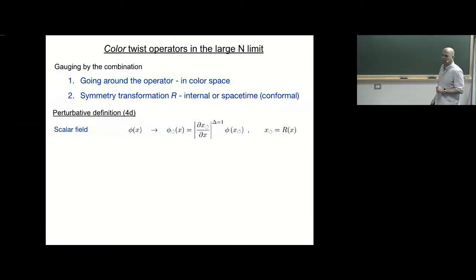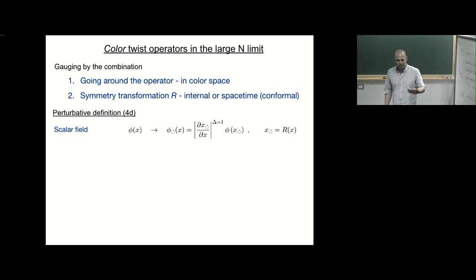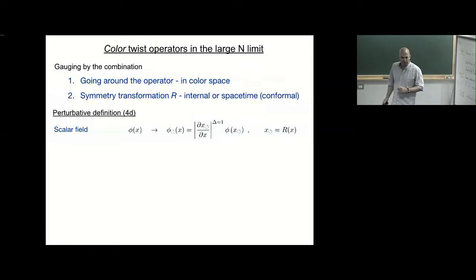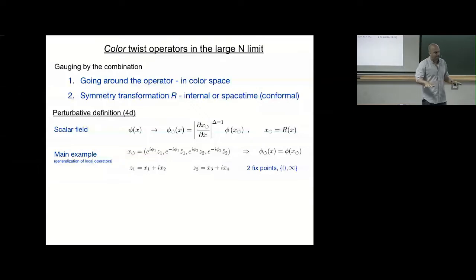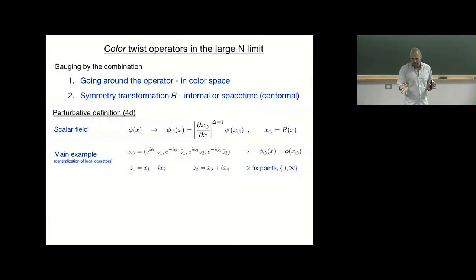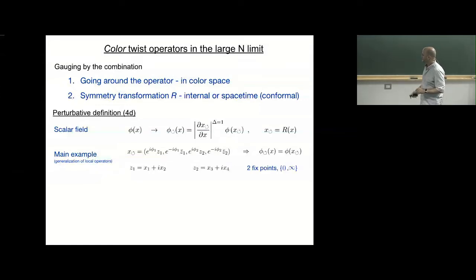Let R here be some symmetry transformation in some space-time — for example, in a moment we'll take a rotation — but it can be any element of the conformal group if you're talking about conformal theory. The twisted operator will be the scalar you get by applying this symmetry transformation and going to the twisted point, with the conformal weight of the transformation. For scalars, delta equals one. The simple twist we focus on today: we have four-dimensional Euclidean space divided into two orthogonal two-planes, doing rotation by phi_1 in one plane and phi_2 in the other. For such a rotation the Jacobian is trivial — just one — so the scalar field just transforms to the rotated point. Z_1 and Z_2 are complexifications of these two planes.